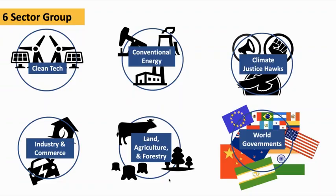We quite often use six groups for the climate action simulation. One group represents clean energy interests — clean tech, wind and solar companies. Another represents conventional energy — coal, oil and gas interests. A third group represents climate justice hawks, global activists representing the boldest possible climate action. Another group represents industry and commerce — car manufacturers, retailers, that kind of thing. And then another group represents land, agriculture and forestry interests.